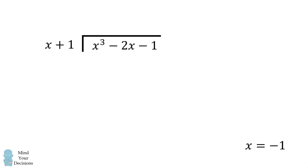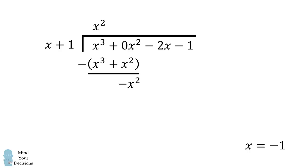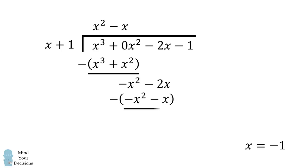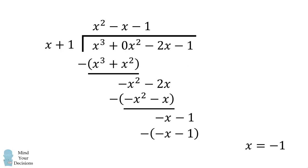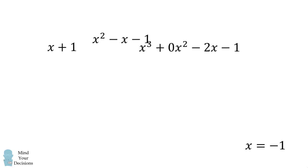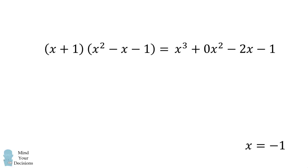We can divide the cubic by the linear factor to get a quadratic factor. We'll do this by polynomial division, putting in a 0 times x squared term to make sure the columns align correctly. We first multiply by x squared, then simplify, carry down negative 2x, then want negative x, simplify, carry down negative 1, and finally we have negative 1, which results in 0. Therefore, we have the quadratic factor. Thus, x plus 1 multiplied by the quadratic x squared minus x minus 1 is exactly equal to this cubic.